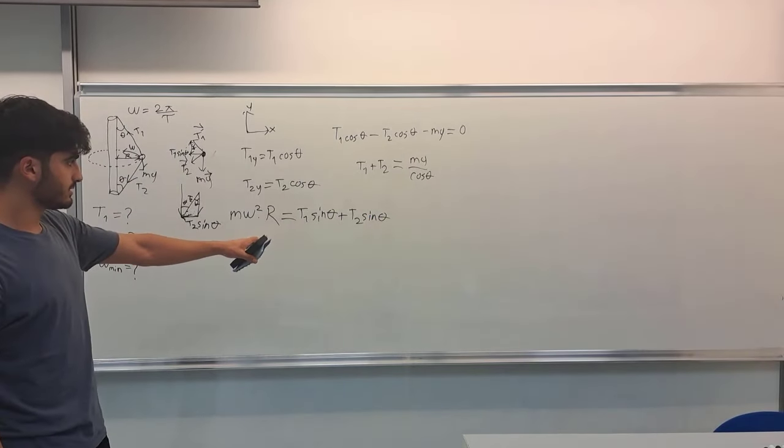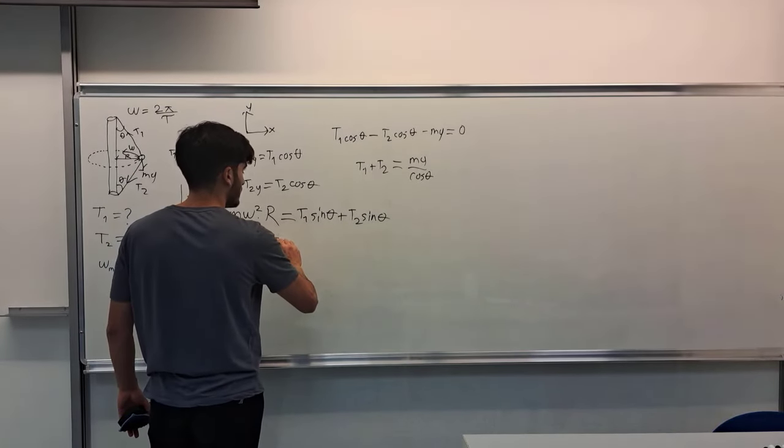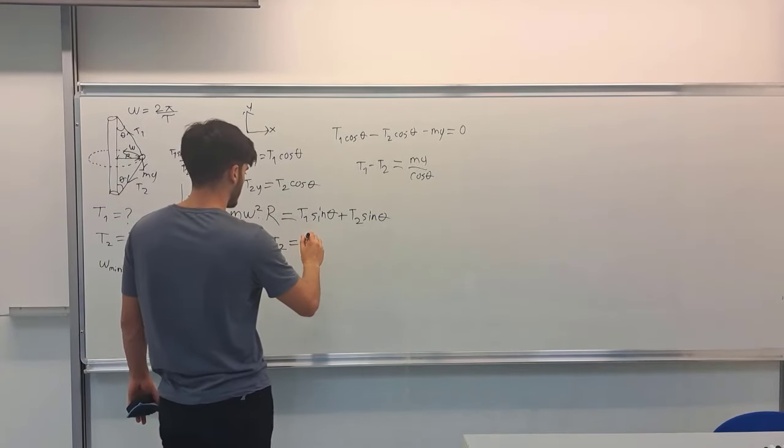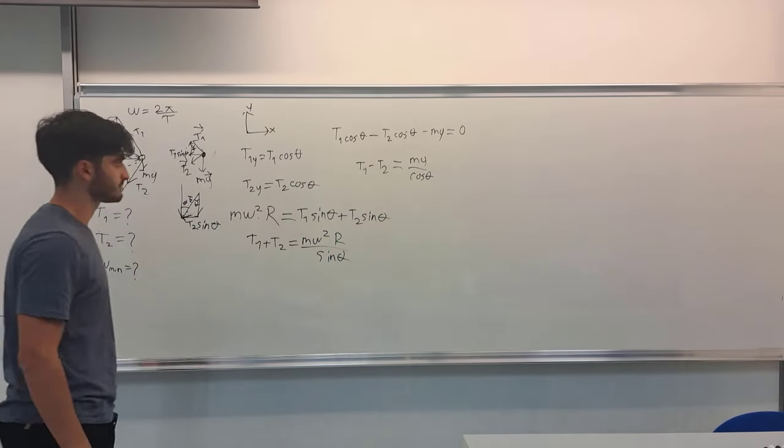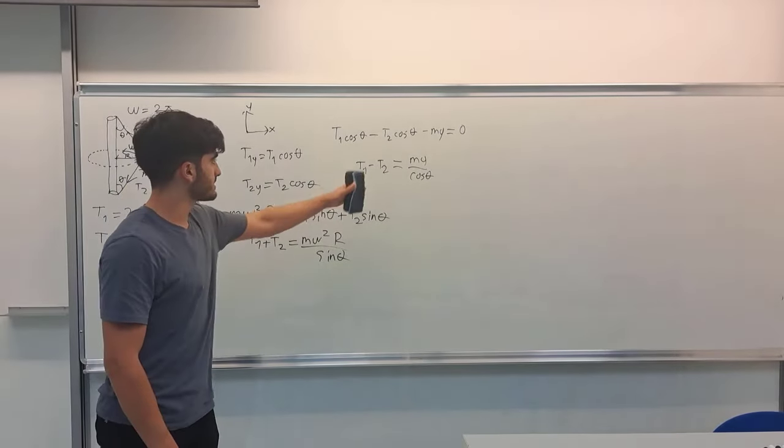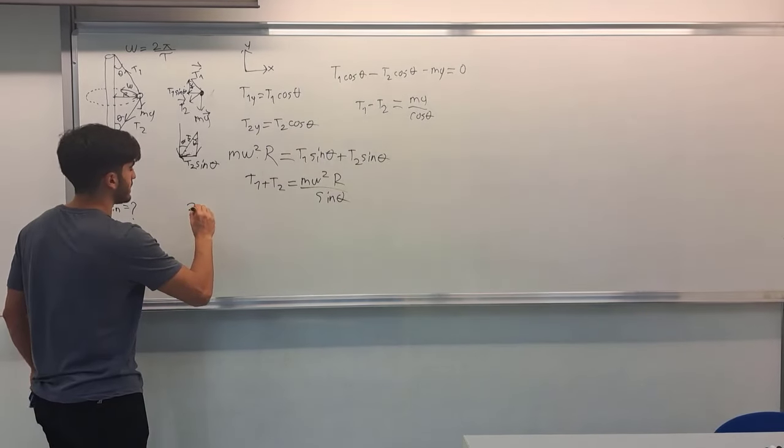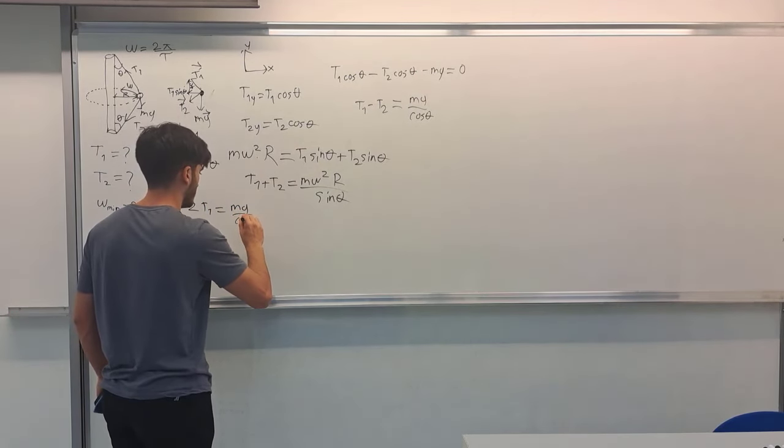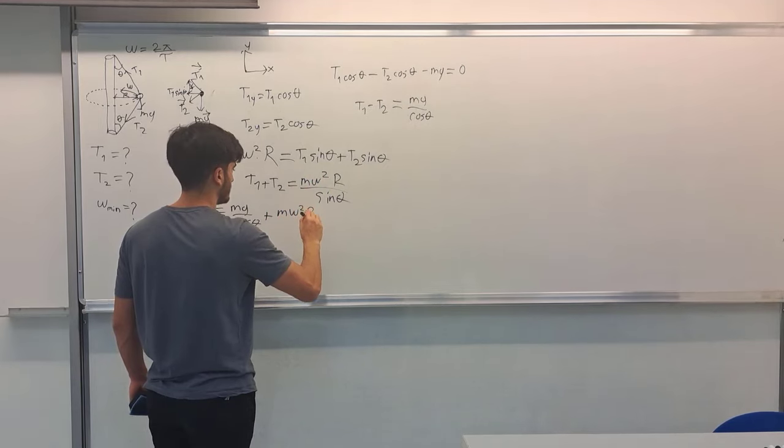Now, also, I can keep this T1 and T2 alone. So I can see T1 plus T2 equals, oh, sorry, I'm going to write it down. This should be T1 minus T2. So T1 plus T2 equals m omega squared r over sine theta. Now, to find T1 and T2, I have two equations, and when I sum up these two equations, I obtain two times T1. So 2 times T1 equals m g over cos theta and plus m omega squared r over sine theta.